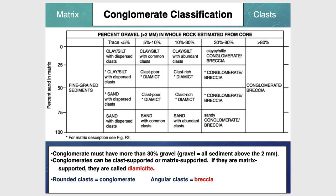Conglomerates must have more than 30% gravel. They can be clast-supported or matrix-supported — the proportion of matrix versus clast is the critical classification factor. Remember: 30% for conglomerates, 10–30% for an intermediate category, and 5–10% specifically for diamictites. Silts and clays usually have less than 30% gravel. That 30% threshold separates conglomerates and breccias from clays, silts, diamictites, and sandstones.